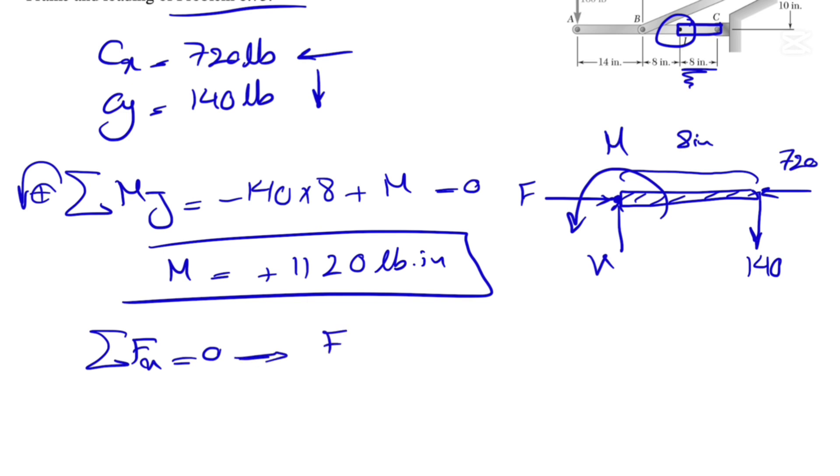So now let's do the sum of all forces in X direction equals zero. So we have our F, we have minus 720 pounds, which is the reaction at C. And that's pretty much everything equals zero. So our F is 720 pounds, no negative sign. That shows the direction that we assumed was correct.